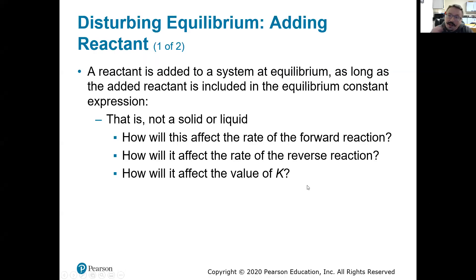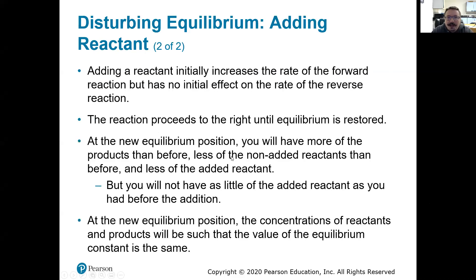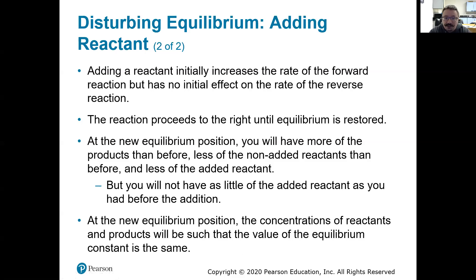Adding a reactant will not change K, because K is specific at that specific temperature — if it's 10 at 25 degrees, it's always 10 at 25 degrees. What it will do is increase the rate of the forward reaction, because we've got to make more product to get that ratio of top to bottom back to 10. So by adding reactants, we push the reaction towards the product side — to the right. No change in the equilibrium constant, but an increase in the forward reaction rate.